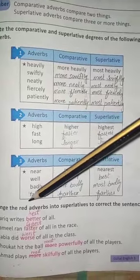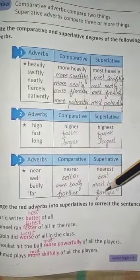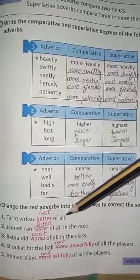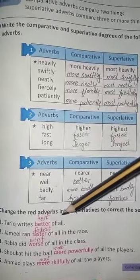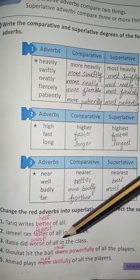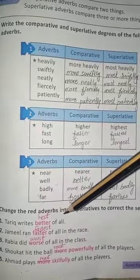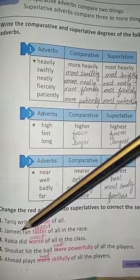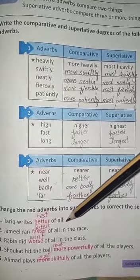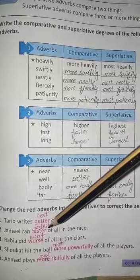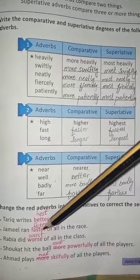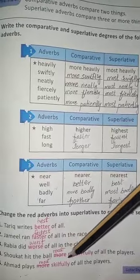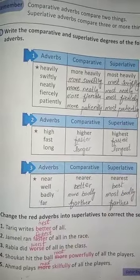Now we have to change the adverbs from comparative to superlative in the correct sentence. They have given us comparative forms, so we will convert to superlative. Tariq writes better of all — in superlative it becomes best. Jamil runs faster of all in the race — that becomes fastest. The next is worst, then most powerful becomes most.